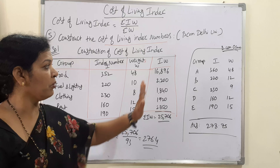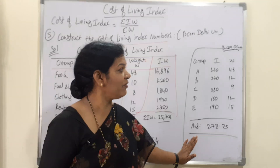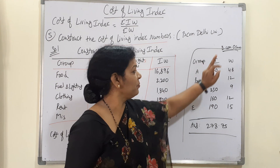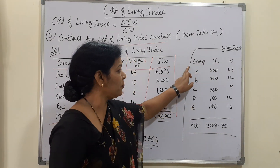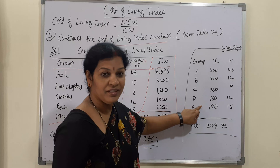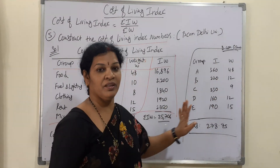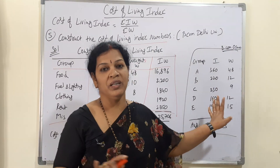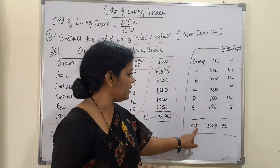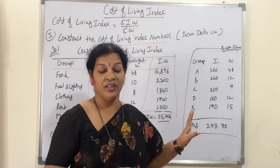Now here is a homework problem from Usmani University. Groups A, B, C, D, and E are given along with their index numbers and weights. Work it out yourself — the answer should be 278.75.